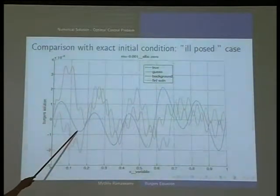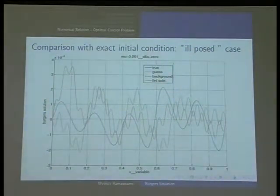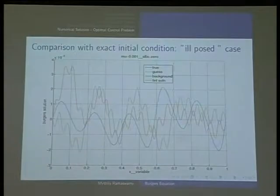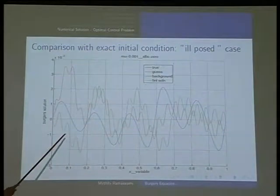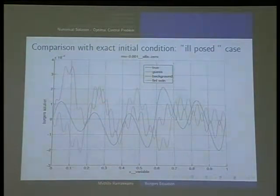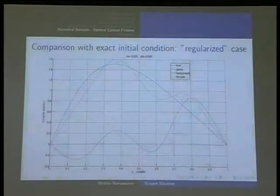If I give a more oscillatory one, then it doesn't happen. I hope you can see the true solution is the blue one, and the final solution is not that close because the background solution is forcing it to go away from the true solution. The problem, as I said, alpha is 0, so the background term is not there. Because of this, multiple minimas are appearing, and one of the minima is what we are finding as the final solution. This is one of the local minimas. Although the true solution is one of the minimas, we are not able to capture it correctly.